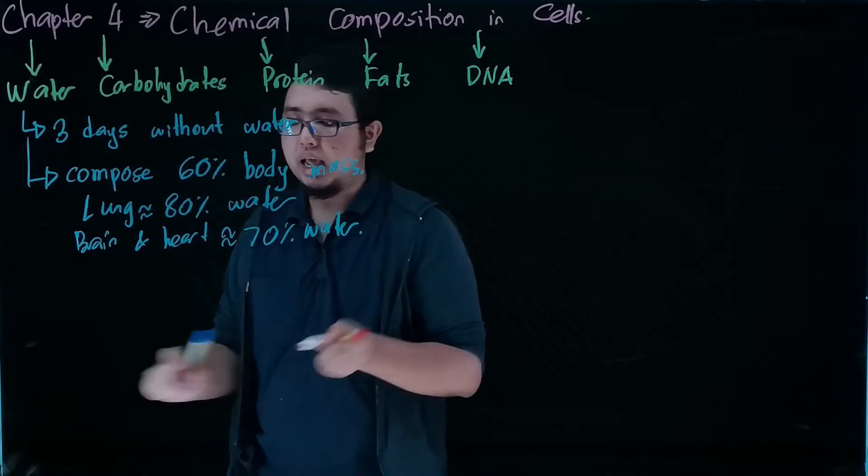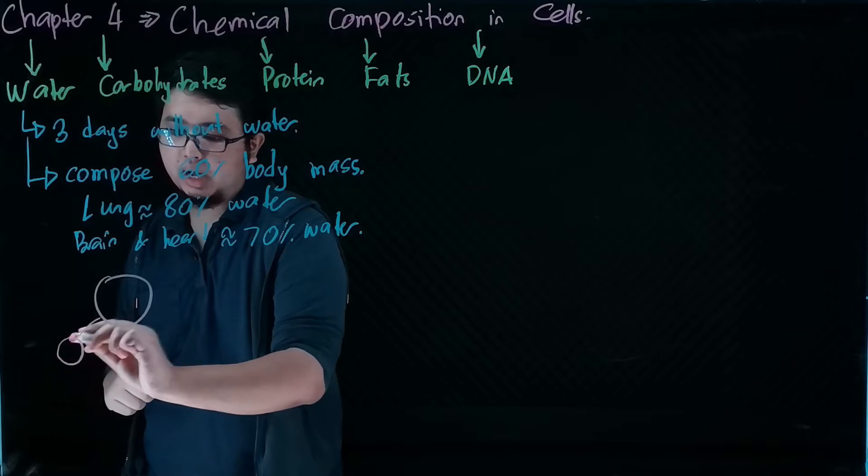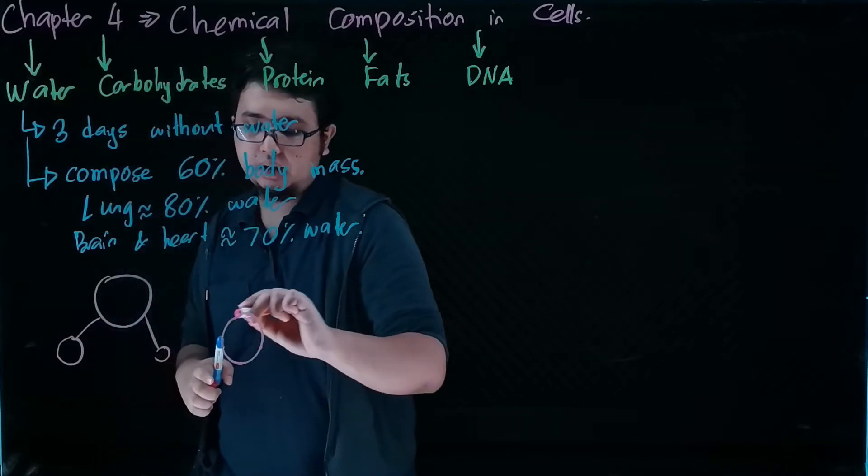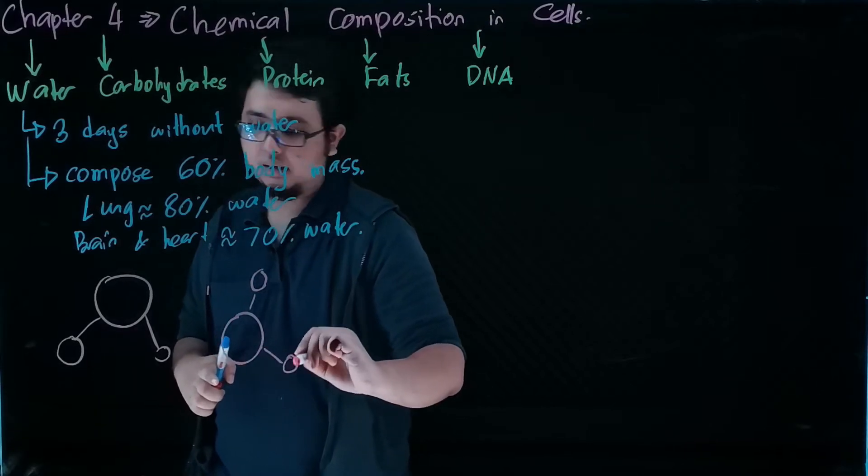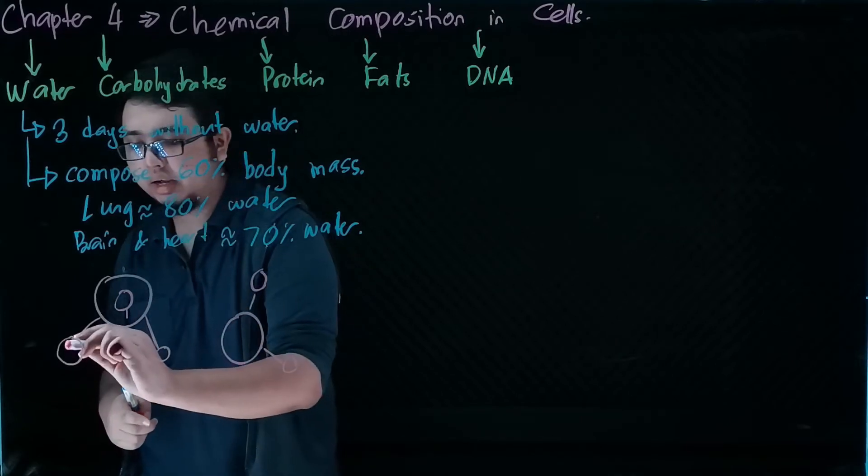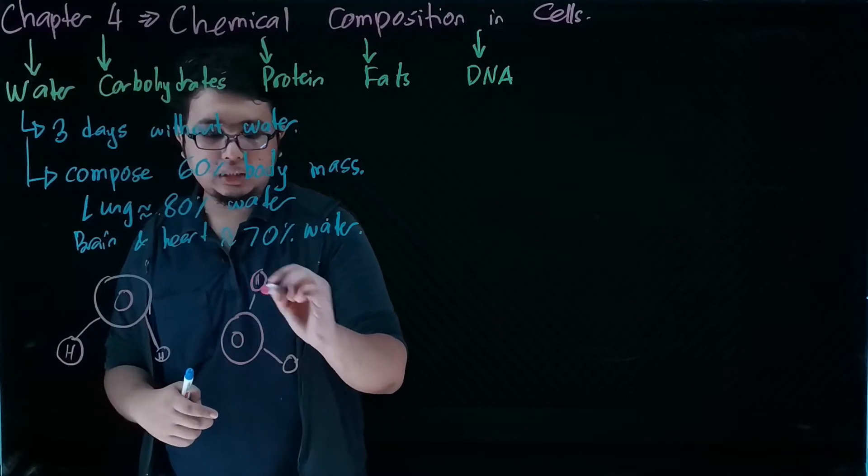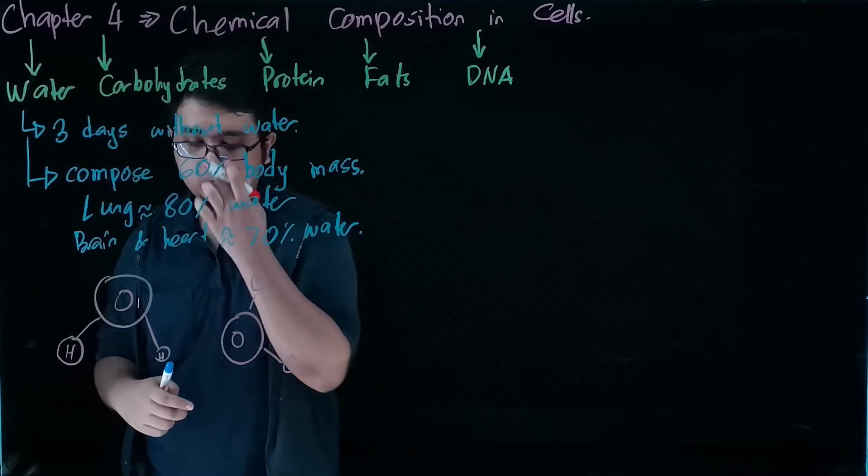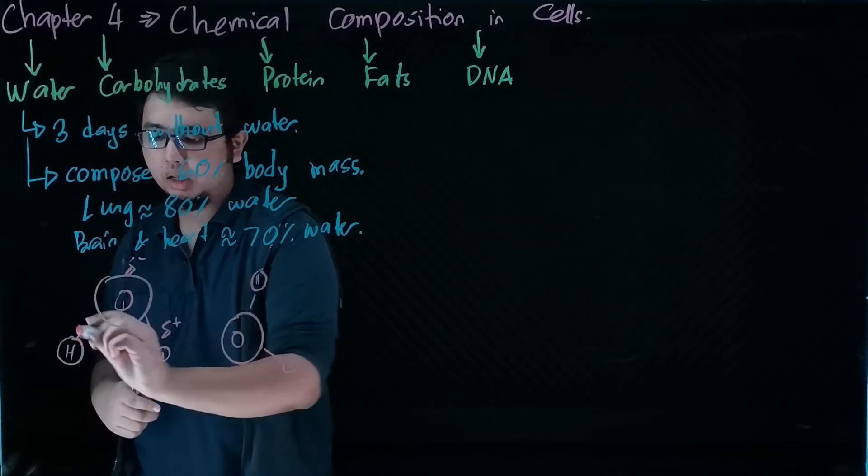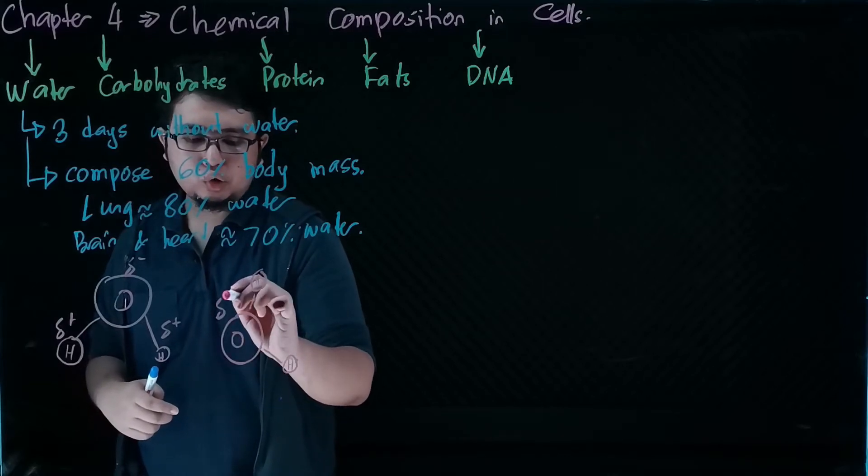Why is water so important in our body? It's because water has its own special characteristics. The water molecule, consisting of oxygen and two atoms of hydrogen, creates polarity because oxygen is a negatively charged ion and hydrogen is a positively charged ion. This nature of water molecules causes them to have polarity.